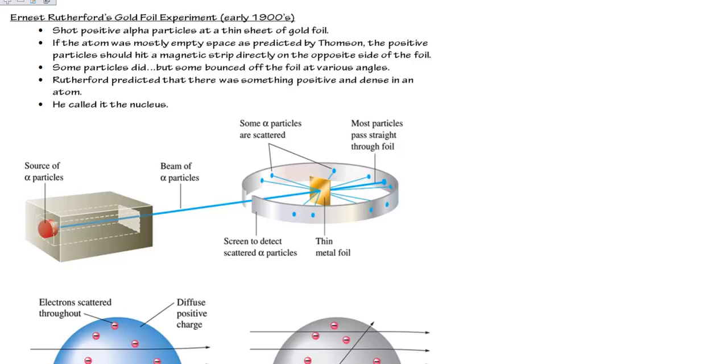We've got this positive beam. Positive, positive, positive. And we're going to shoot that beam at a real thin sheet of gold foil.